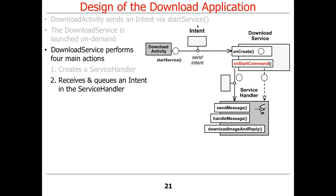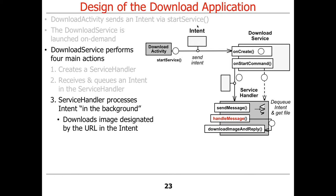The main thread — in this case running in a separate process — will receive the intent sent from the activity when it calls startService. The onStartCommand callback is invoked, and that goes ahead and queues the intent with the service handler, which sticks it on a queue. Later, the background thread pulls the intent off the queue, downloads the image designated in the intent, and replies back to the caller. The URL for the image is attached as part of the intent — as the data or as an extra.